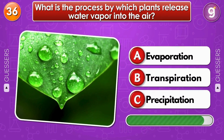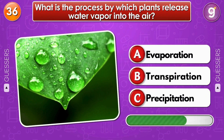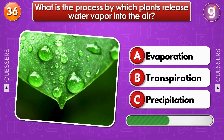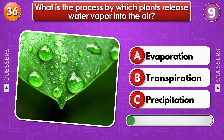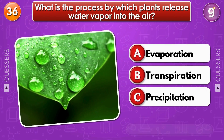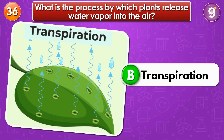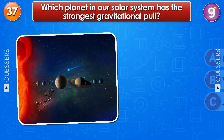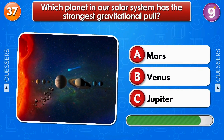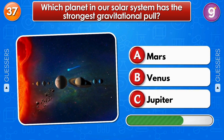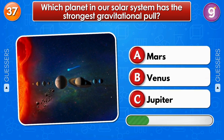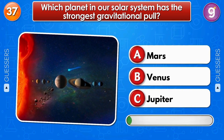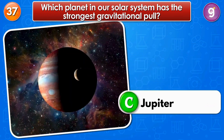What is the process by which plants release water vapor into the air? Transpiration. Which planet in our solar system has the strongest gravitational pull? Jupiter.